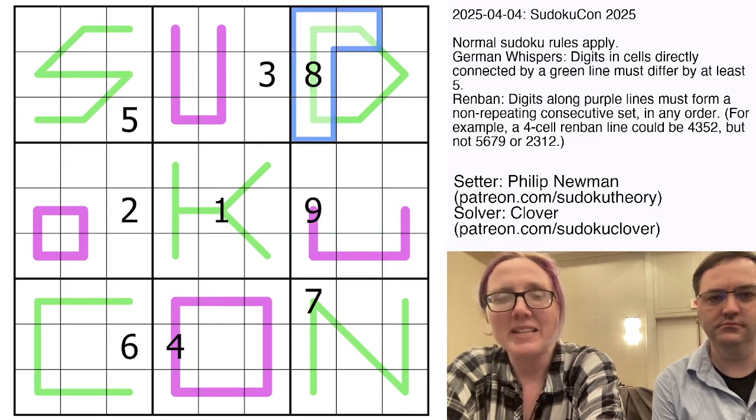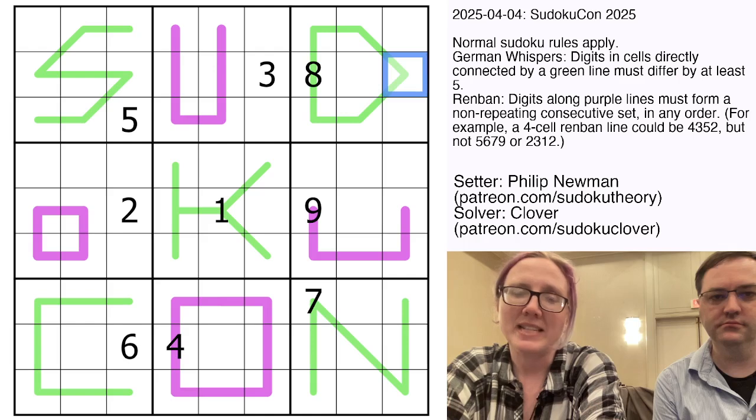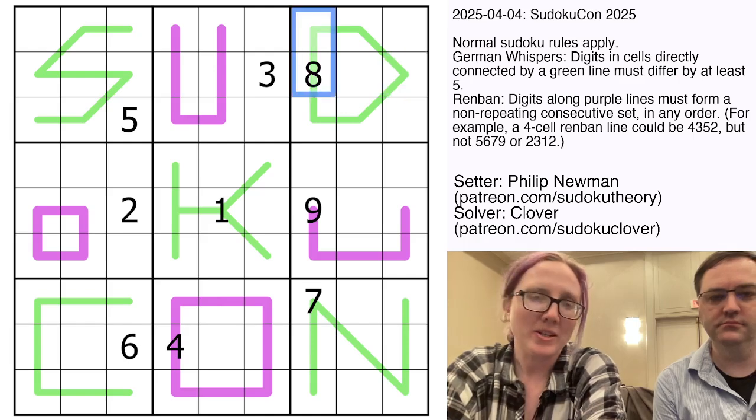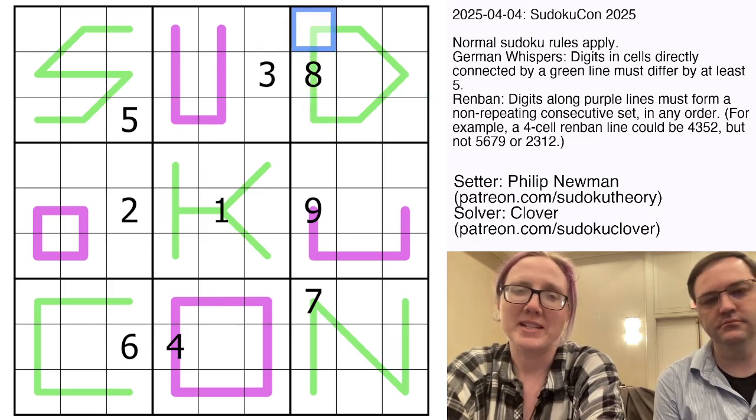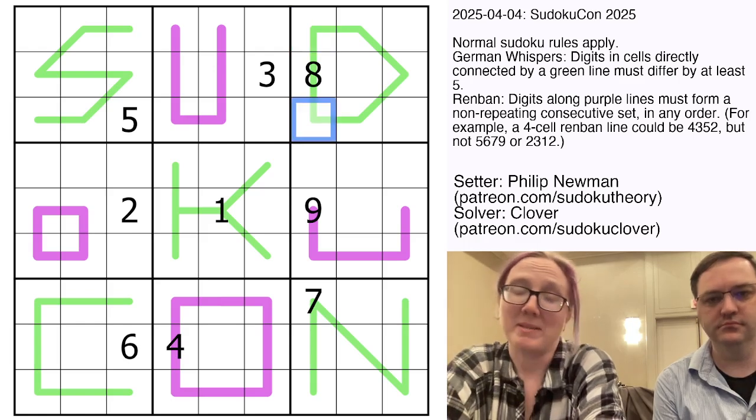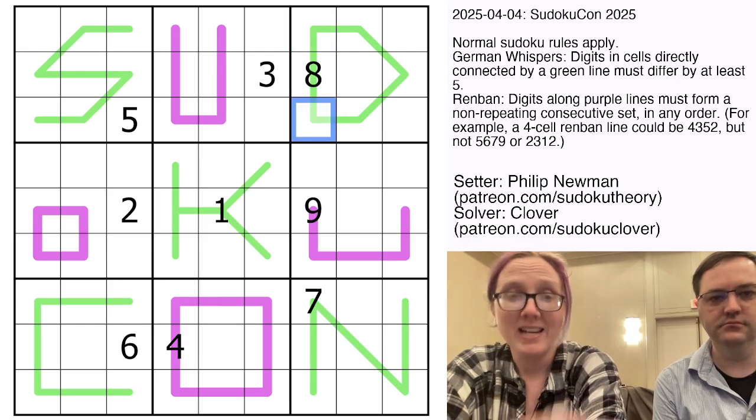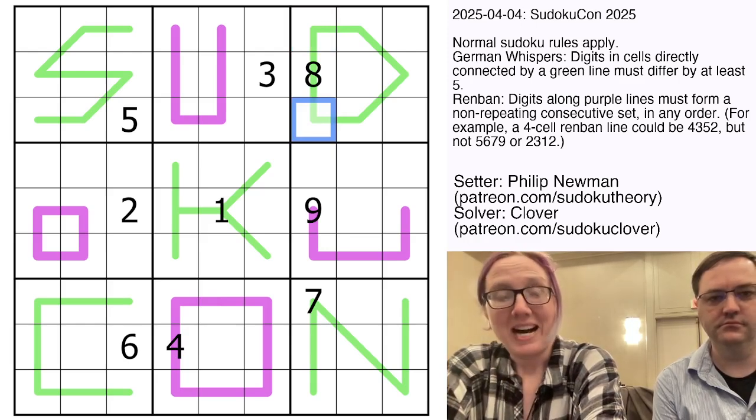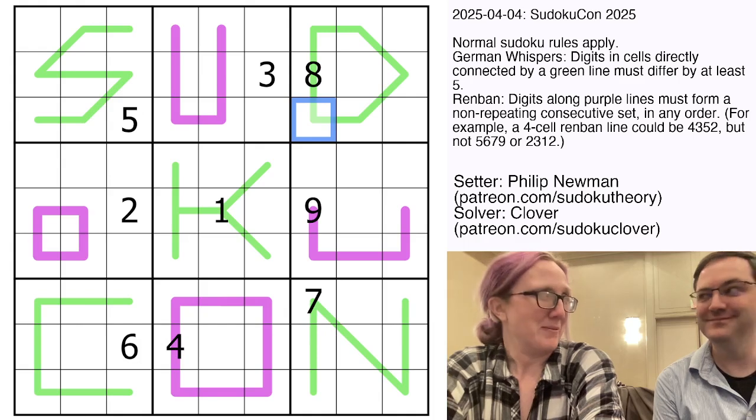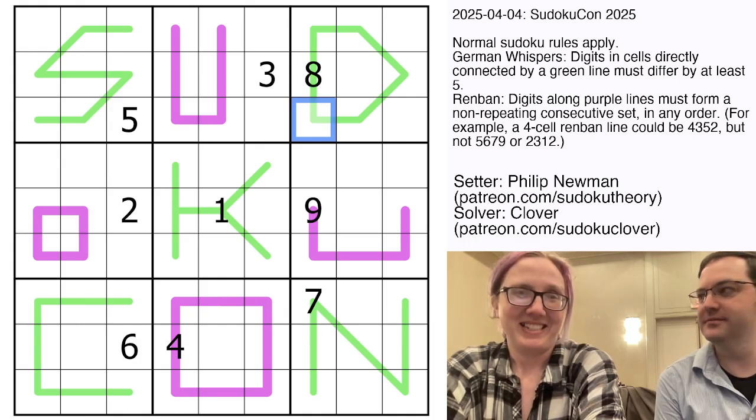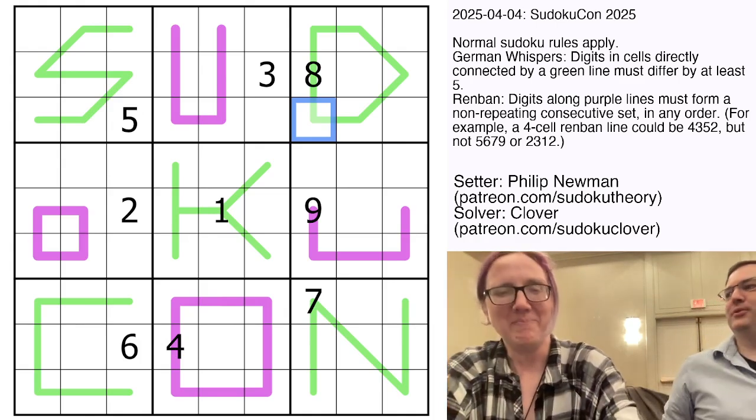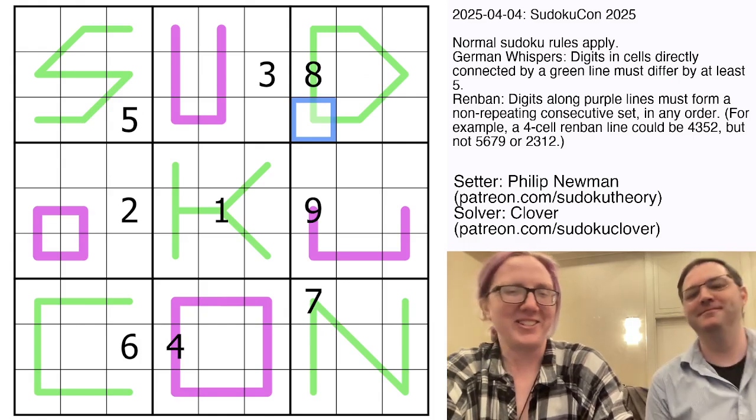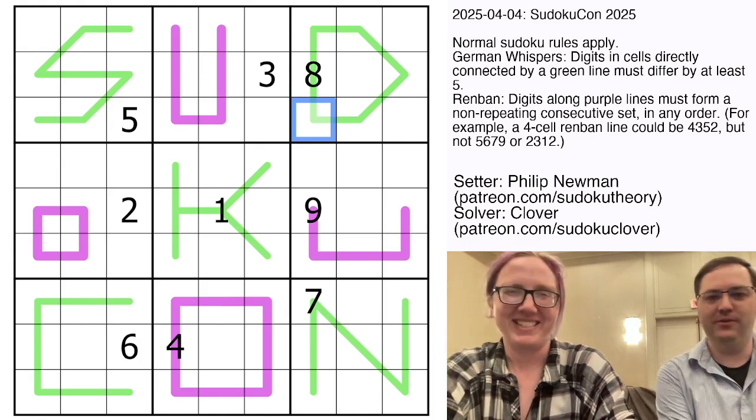The green letters are German Whispers lines. Along these, digits that are adjacent to each other have to have a difference of five or more. So whatever goes next to the eight here has to be at least five away from eight. So specifically in this case, it means it has to be no greater than three.